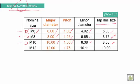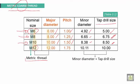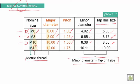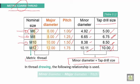In the notation, M stands for metric thread and the number represents the major diameter or nominal size. The minor diameter and tap drill size dimensions are almost equal. In thread drawing, the following relationship is used: minor diameter equals major diameter minus the pitch.